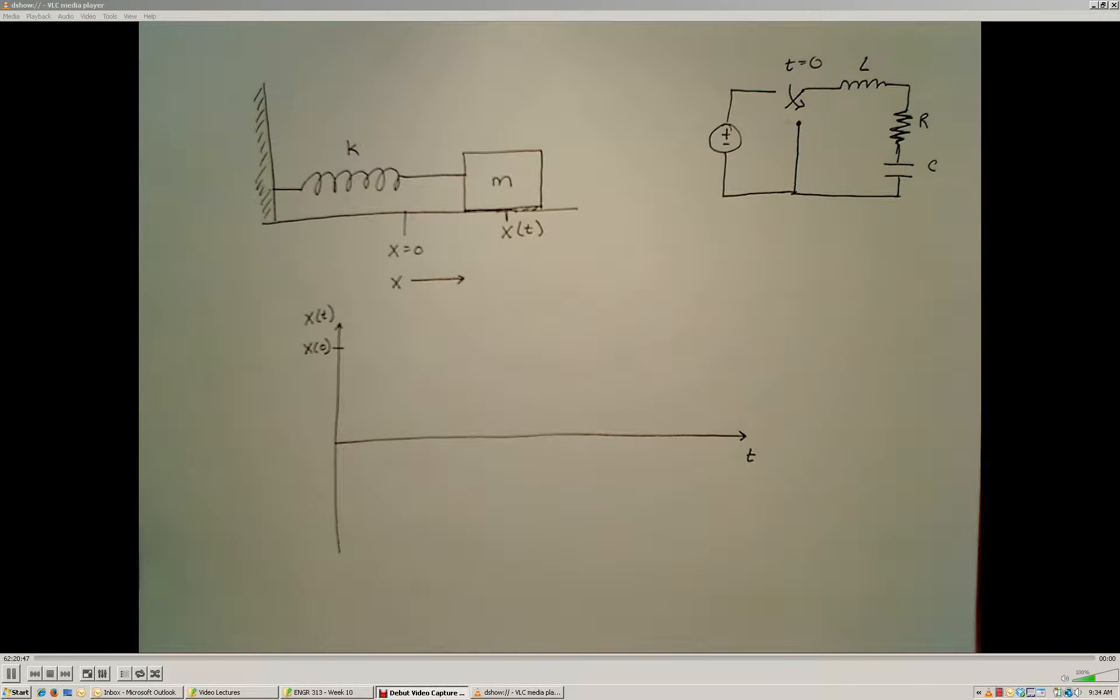We're going to begin our study of second-order systems now. A second-order system is any system that contains two distinct energy storage elements.